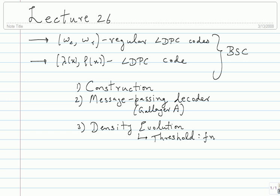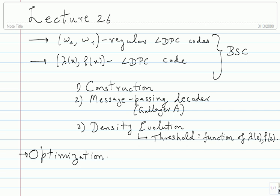The threshold is purely a function of lambda(x) and rho(x). I briefly talked about optimization, which is an important part. Basically you can find good rho(x) and lambda(x) purely in terms of threshold — either find the rho(x) and lambda(x) of a particular rate which gives you the best threshold, or for a particular threshold find the highest rate possible. Both are ways of optimizing.